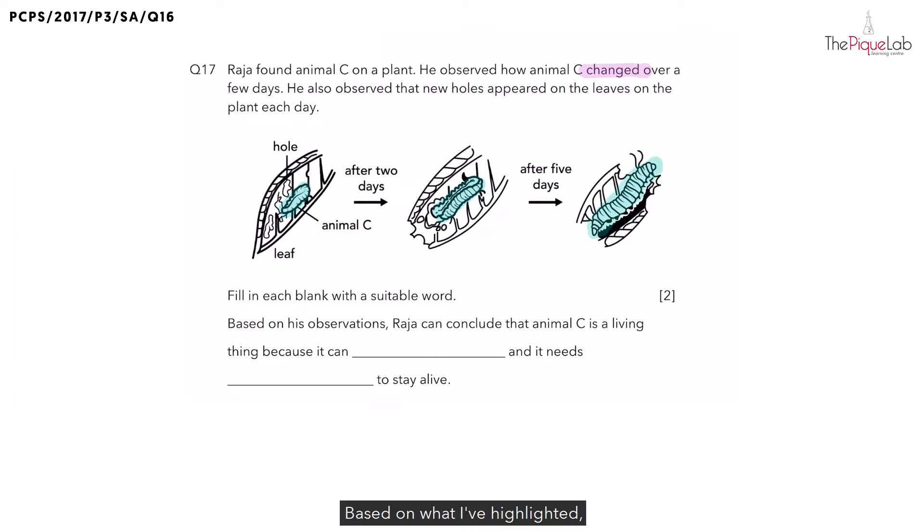Based on what I've highlighted, can you tell me how did animal C change? You can see that over the next few days, animal C became bigger. So what does becoming bigger mean? If something can become bigger, this means that it has grown.